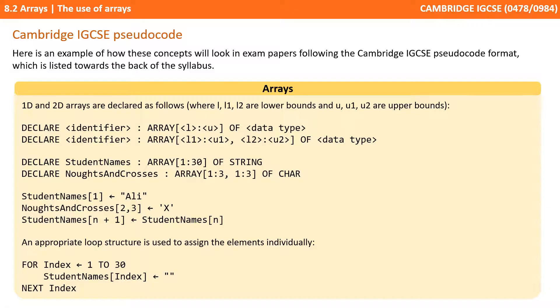As with all the other coded examples we've given you so far, it's important you understand how arrays will look in your exam paper following the Cambridge IGCSE pseudocode format. Now, there's quite a bit on the screen here, but we're showing you examples of how you declare a 1D and 2D array. We're then showing you some examples of how you assign values to the array. And then we're showing you a simple loop at the bottom there that's looping through the individual elements of an array.